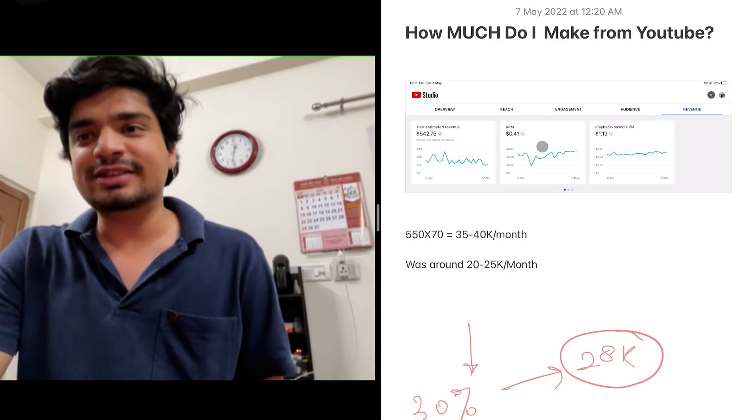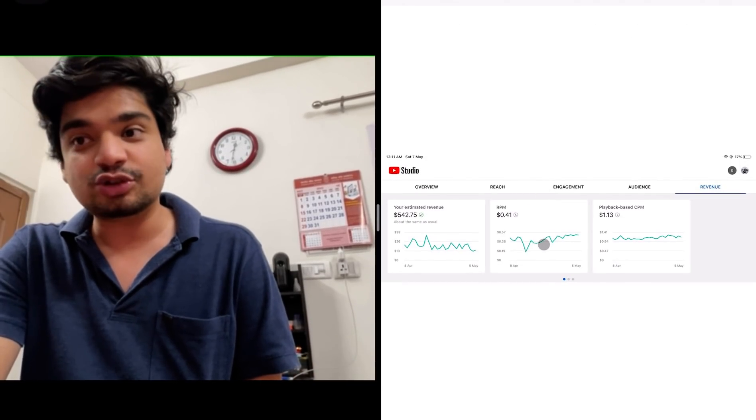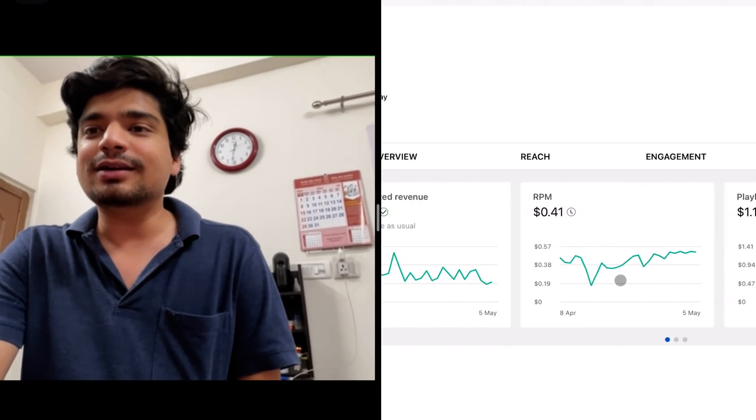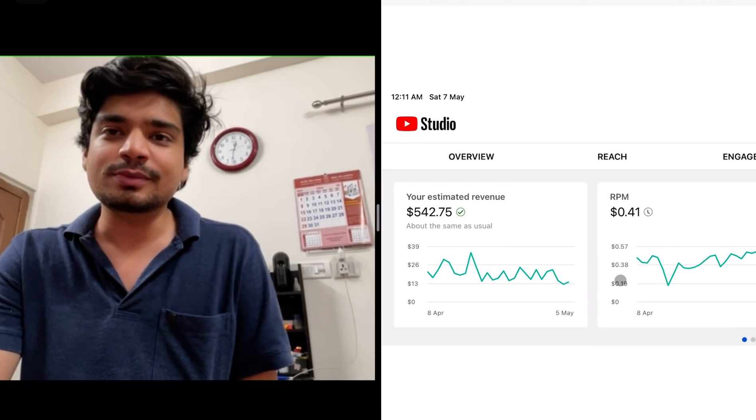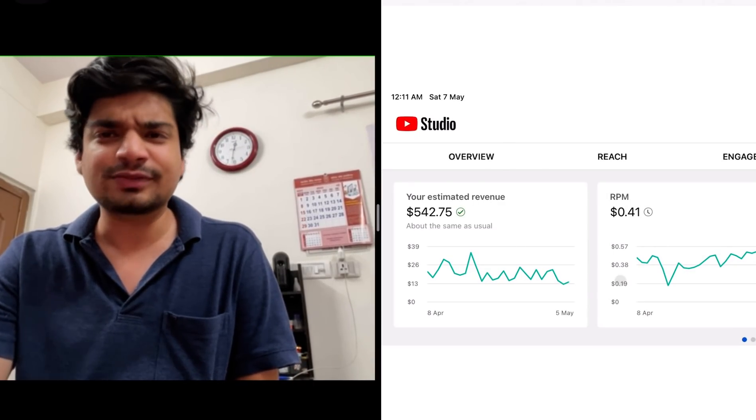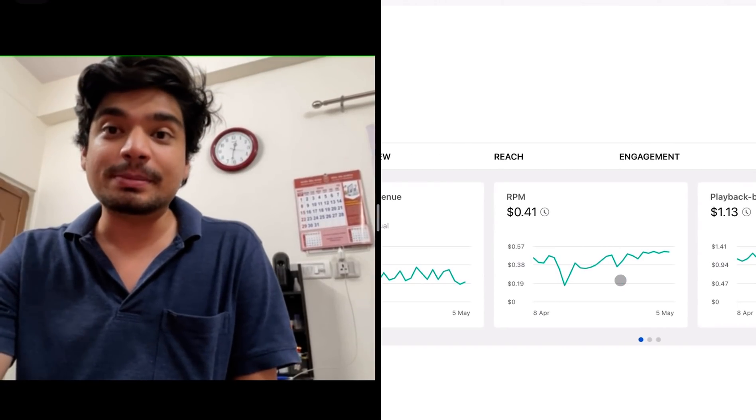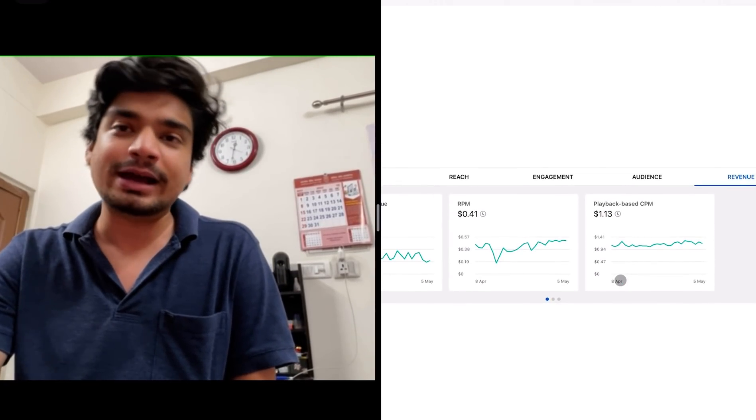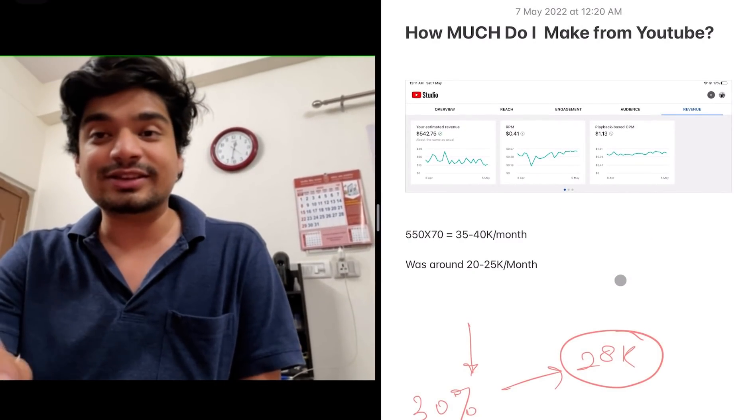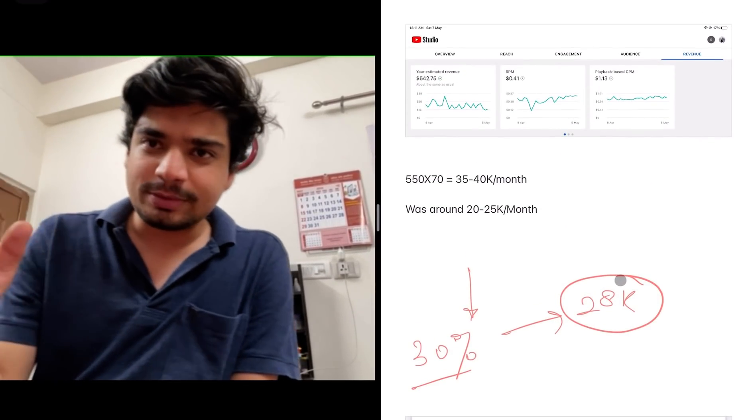So these are my YouTube earnings. This is the screenshot I took just right now. This is my past 28 days revenue. It is $542 and this is something called revenue per mille and this is called playback CPM. I'll get back to this thing later in the video.